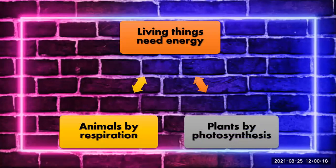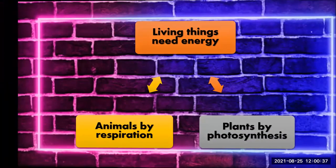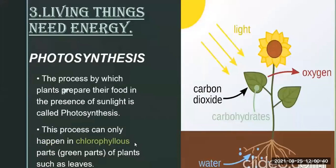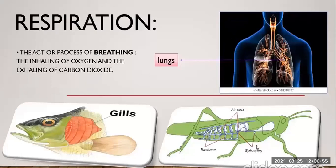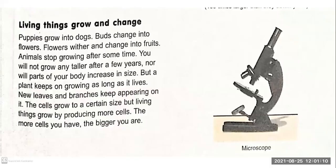Living things need energy, and the process of taking energy is different in animals and plants. Animals obtain their energy by respiration — whether human beings or animals. But if you talk about plants, plants prepare their food in their own body through a process called photosynthesis, and they get energy by this process. Light is the compulsory factor for photosynthesis — it is very important to have light to synthesize food for plants. In animals, we do not require light; we just respire. This respiration process gives us energy and will be taught in detail in the next chapter.